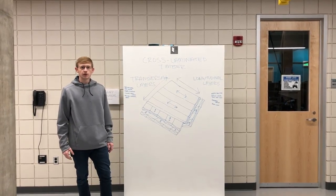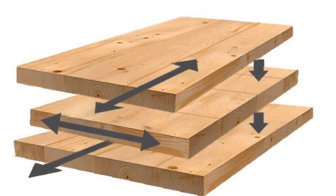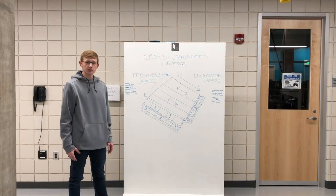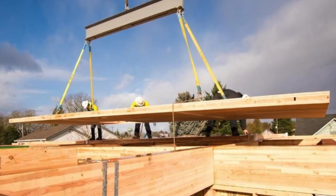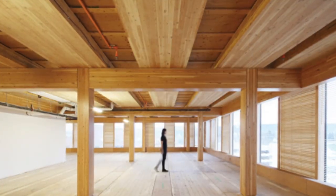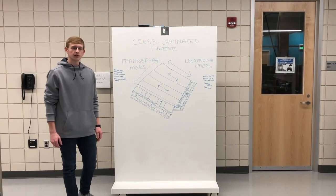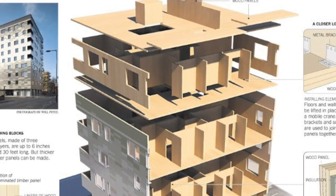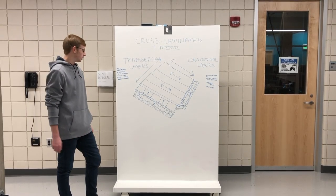Cross laminated timber (CLT) is a new type of construction engineering that uses wood planks stacked in alternating directions, then pressed together using resins, epoxies, and bonds to create a structural solid piece of wood used for walls, floors, and roofs. One advantage is that CLT is lighter than concrete, which can mean less site work. Additionally, laboratory tests have proven that CLT is just as strong as concrete and steel. The wood also acts as an insulator, so less insulation needs to be added to the building.